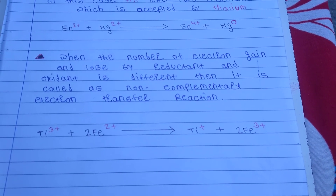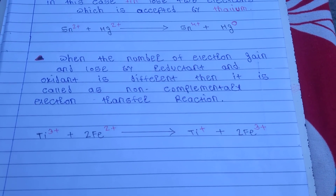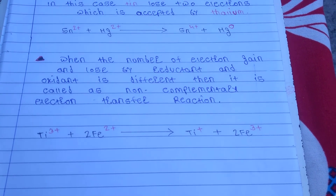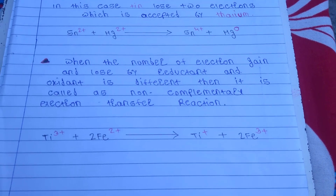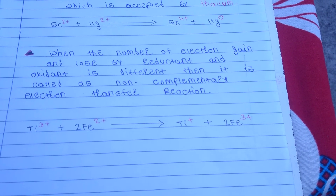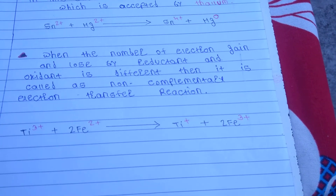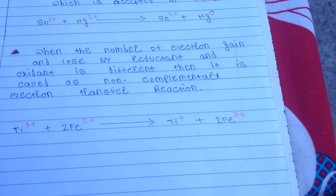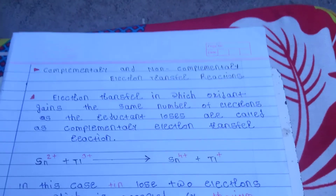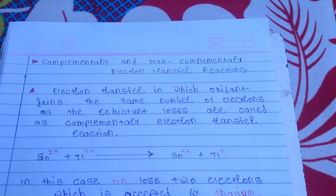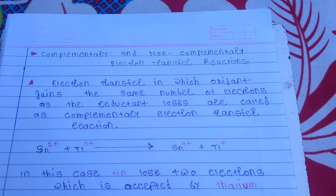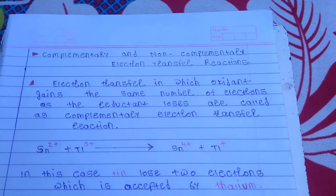In non-complementary electron transfer, the reductant loses two electrons but the oxidant gains less than two electrons or more than two electrons — but not exactly two electrons. This is called the non-complementary electron transfer reaction. These are the two simple types of electron transfer: complementary and non-complementary electron transfer reaction. Thank you.